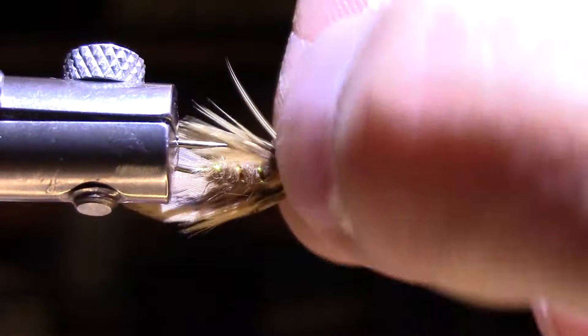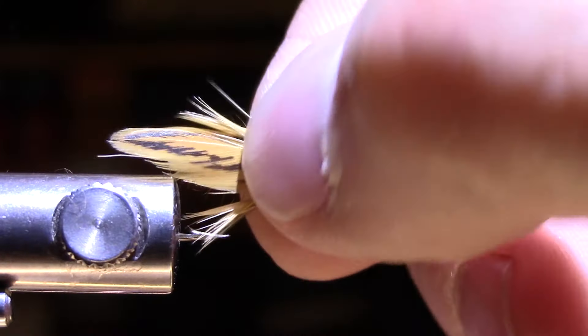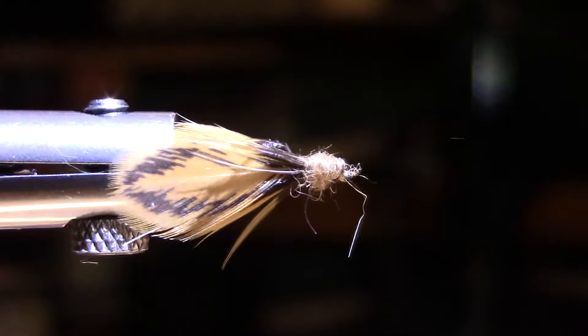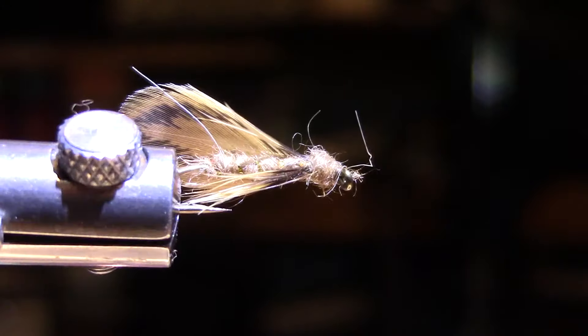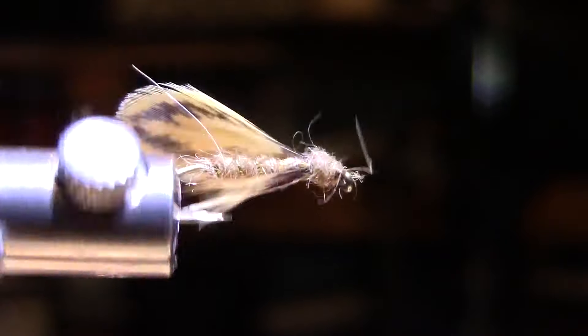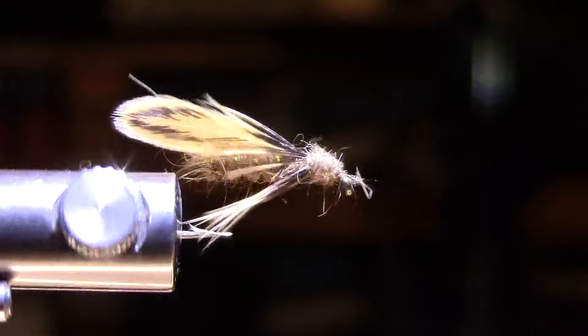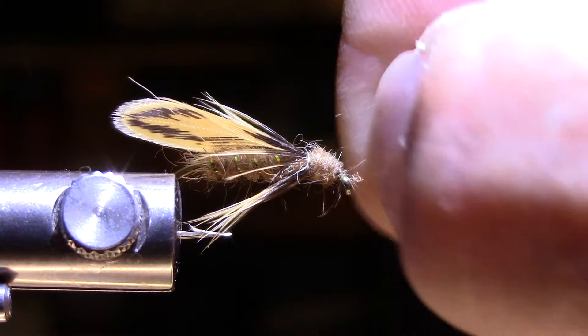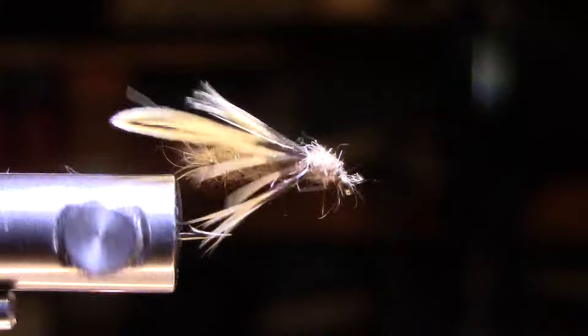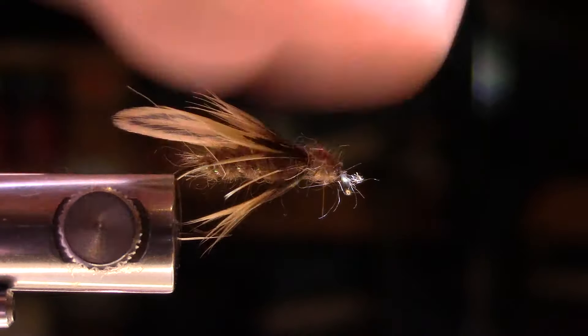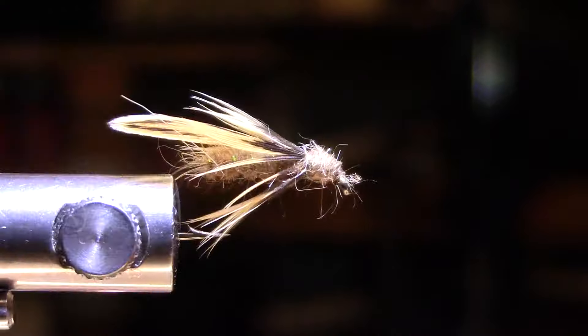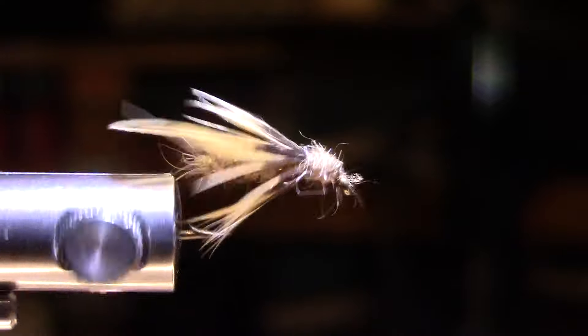And there we have it, a one feather fly, and it looks very very buggy. It looks like a caddis on the water there. Lots of legs, lots of movement as it sits there. Goop this up and it'll float a long time. Even if it doesn't float, it looks so buggy I'm sure trout will take that as a wet fly.